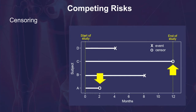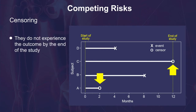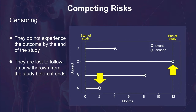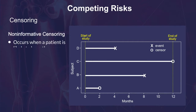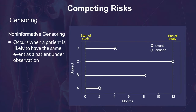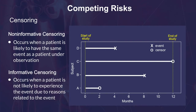Patients are censored when one of three things occurs: they do not experience the outcome by the end of the study; they are lost to follow-up or withdrawn from the study before it ends; or they die during follow-up. If patients who are censored are as likely to have a later event as patients who remain under observation, then censoring is said to be non-informative. Censoring should not occur due to reasons related to the event. If there is a reason why patients do not return for follow-up, the censoring becomes informative.